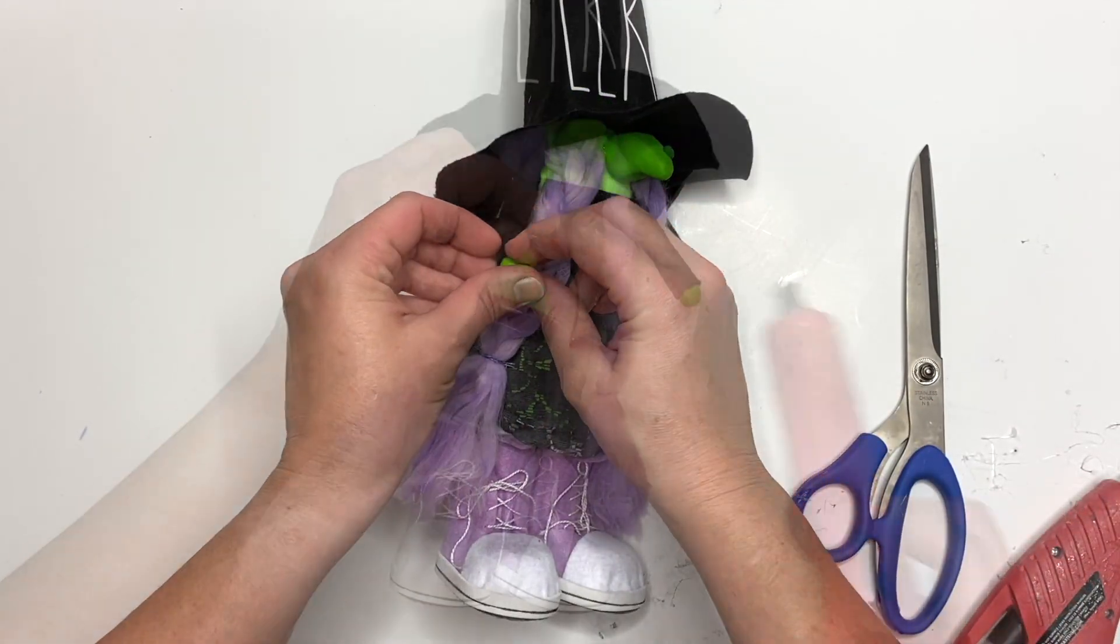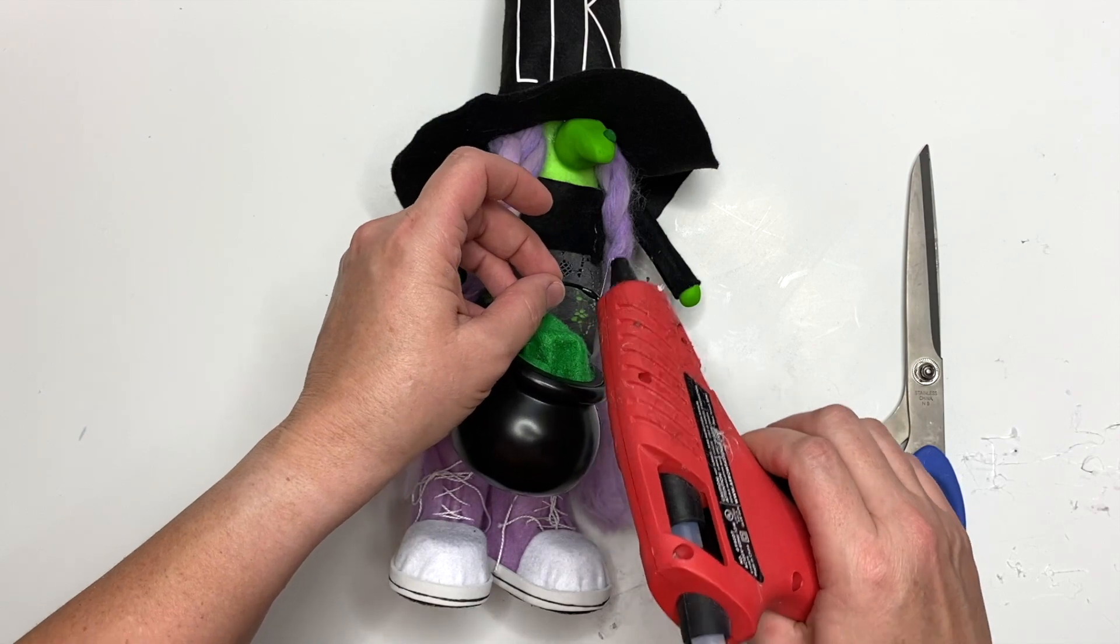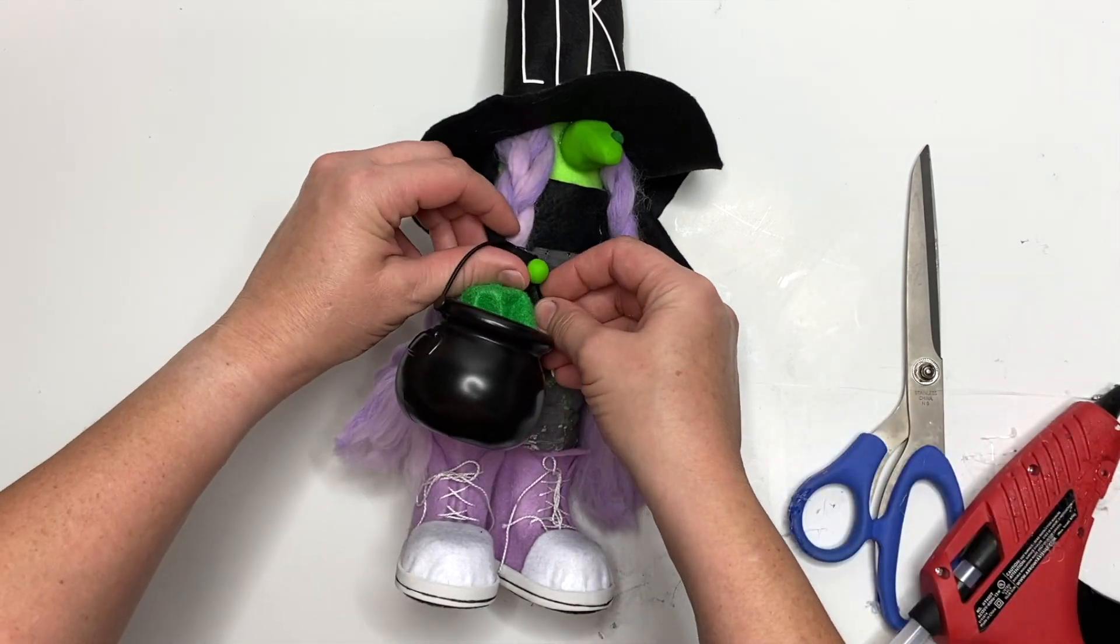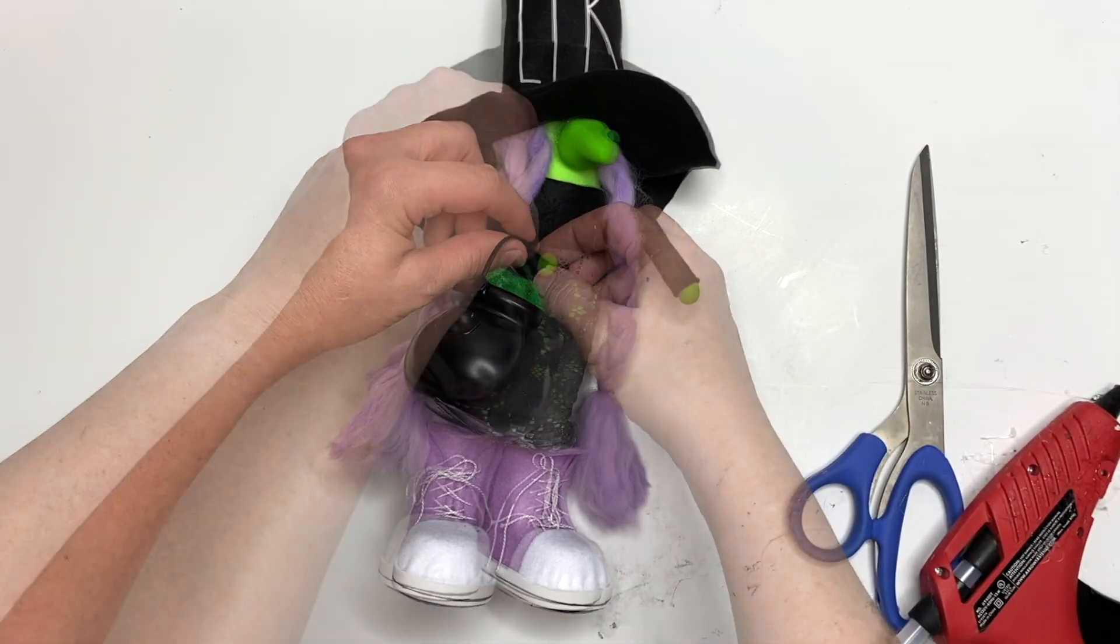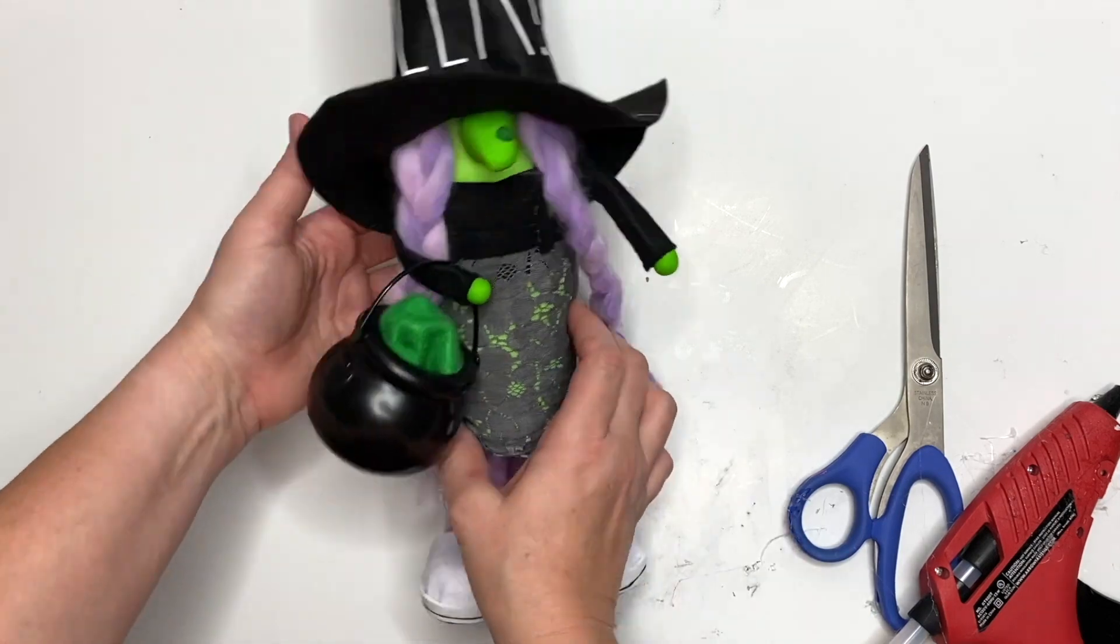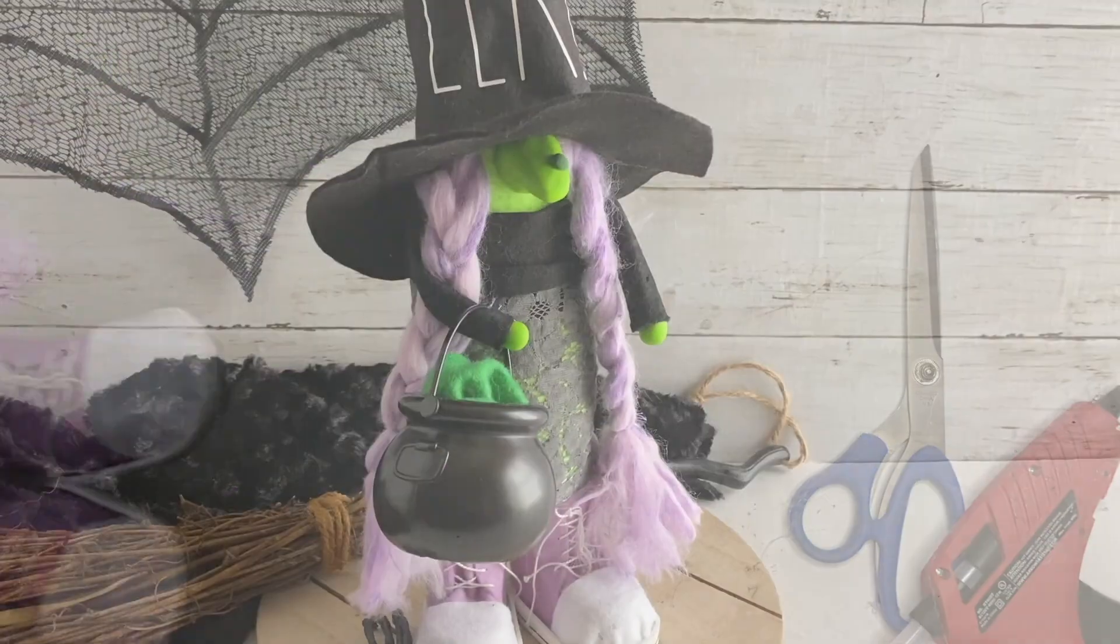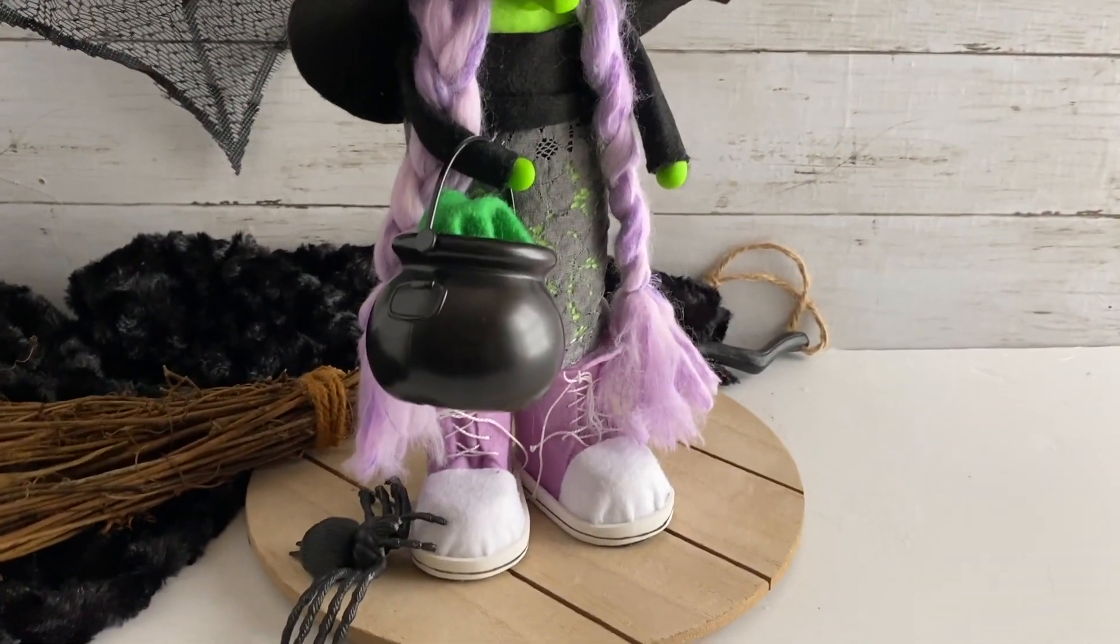Now we're gonna accessorize her with her little hands. I found a little tiny pot at the Dollar Tree and I added a little felt in it and glued it to her, and she's done.